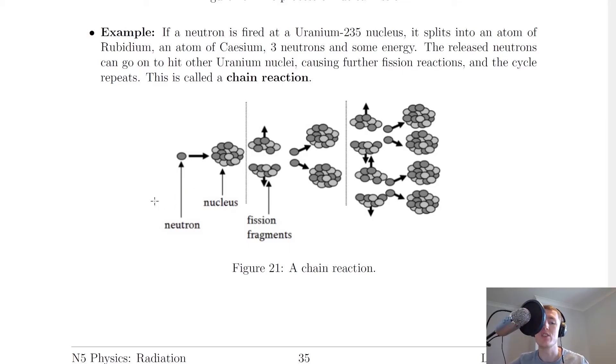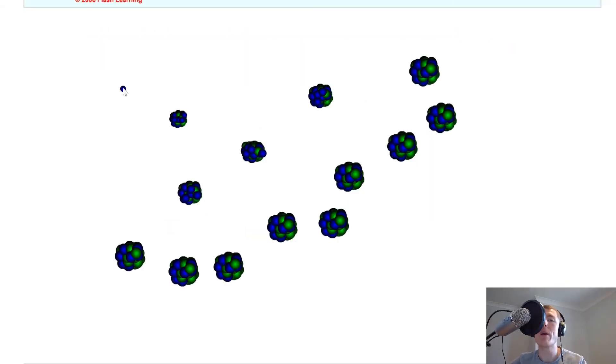So just to help you visualize this a bit more, I'm going to show you another animation. Imagine we've got our incident neutron here and that's going to be fired at our first nucleus, our target nucleus here. Then what we might expect to happen is that the neutrons from that nuclear fission reaction that are released can go on to hit other nuclei, causing more nuclear fission reactions to occur, and that's going to keep repeating.